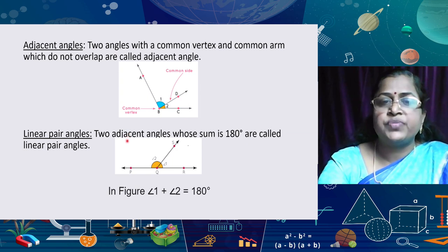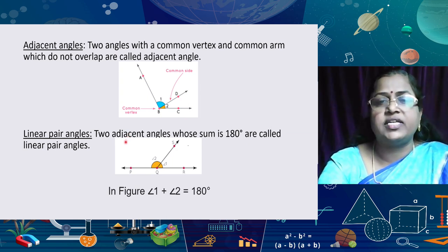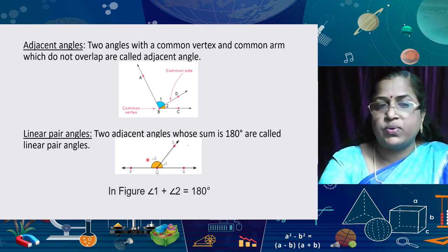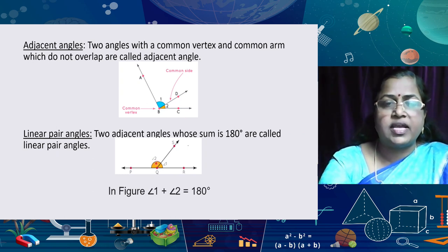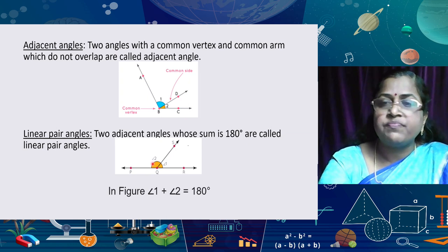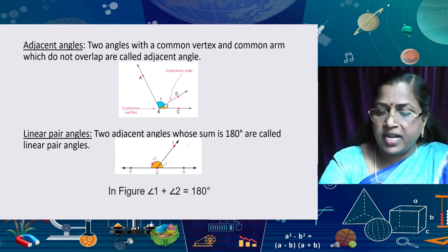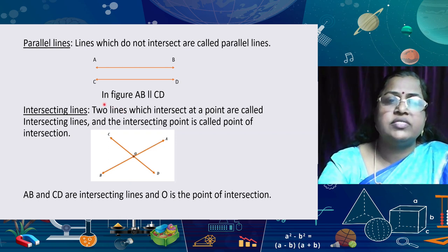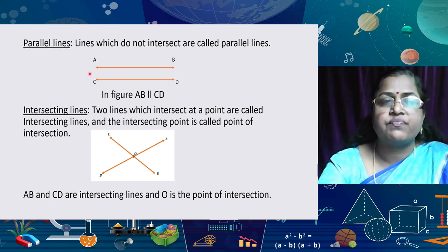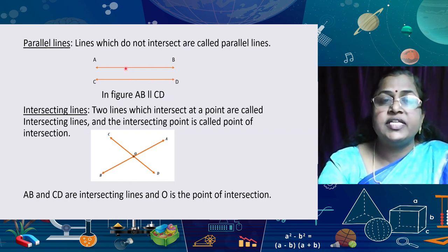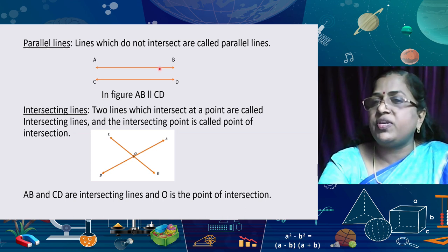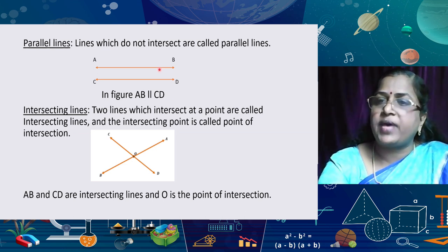What about linear pair angles? Two adjacent angles whose sum is 180 degrees are called linear pair angles. Here angles 1 and 2 are linear pair angles. The sum of angle 1 and angle 2 equals 180 degrees — the sum of linear pair angles is always 180 degrees. Now, parallel lines: lines which do not intersect are called parallel lines. Here AB is parallel to CD, and the distance between these two lines at each and every point is the same.